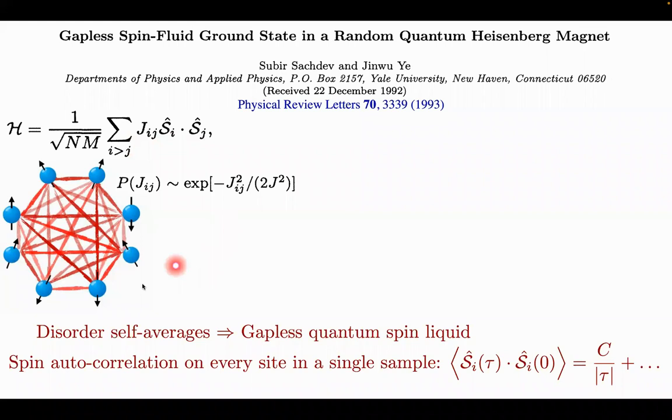And one fundamental difference is that the disorder self averages. So, here, in fact, you don't flow to a strong disorder fixed point. Effectively, you flow to a zero disorder fixed point, but the disorder doesn't matter at all. And you get some rather incoherent type of state at non-zero temperature and a gapless quantum spin liquid at zero temperature. So, in this case, if you look at the spin autocorrelation function, it decays as one over time. And this is the same on every site. So, this constant C is independent of I, even in a given sample. And that's very, very different from the random singlet phase that Revin had studied.